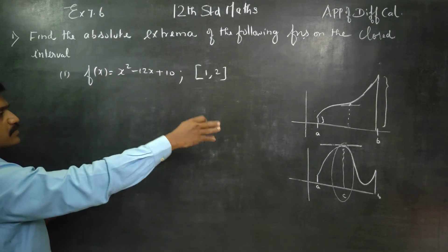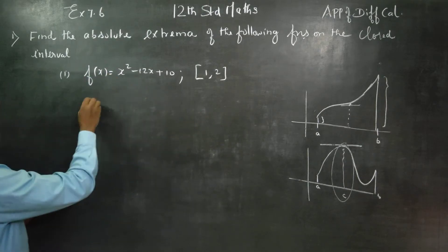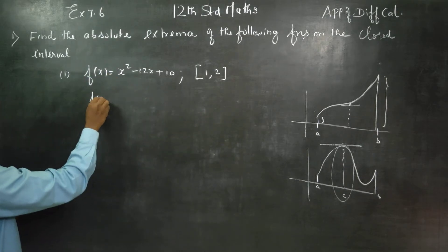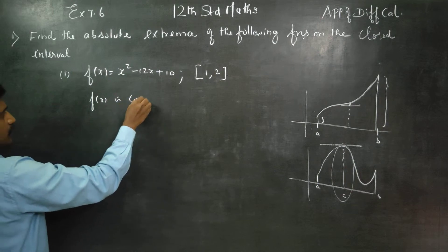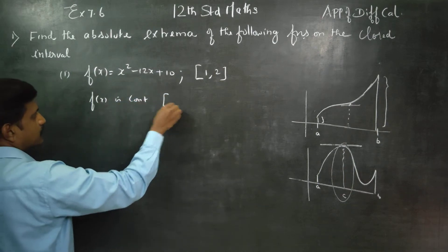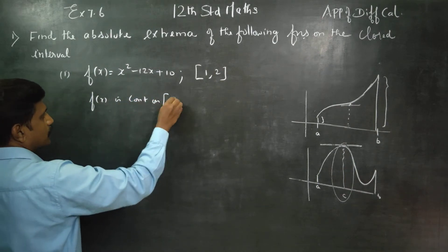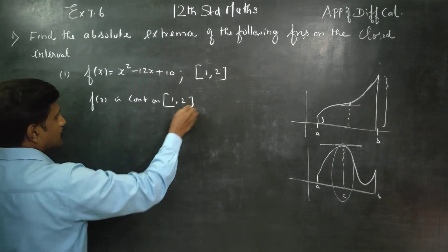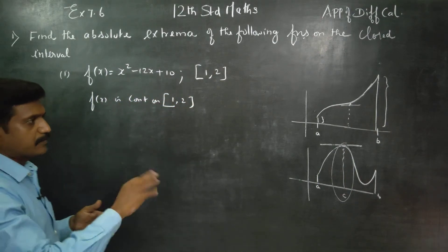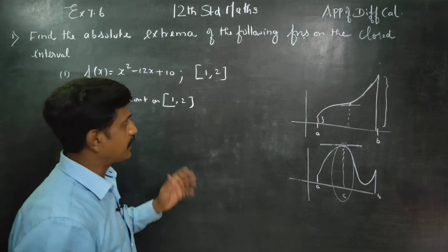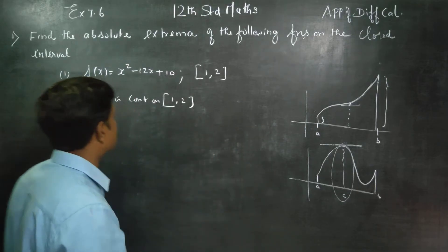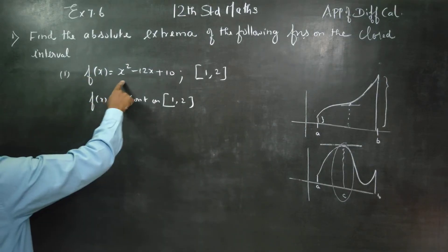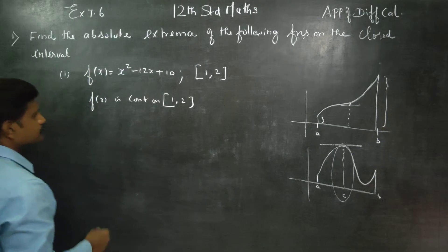Absolute maximum and absolute minimum — f of x is continuous on the interval [1, 2]. This is a continuous curve because it is a polynomial.